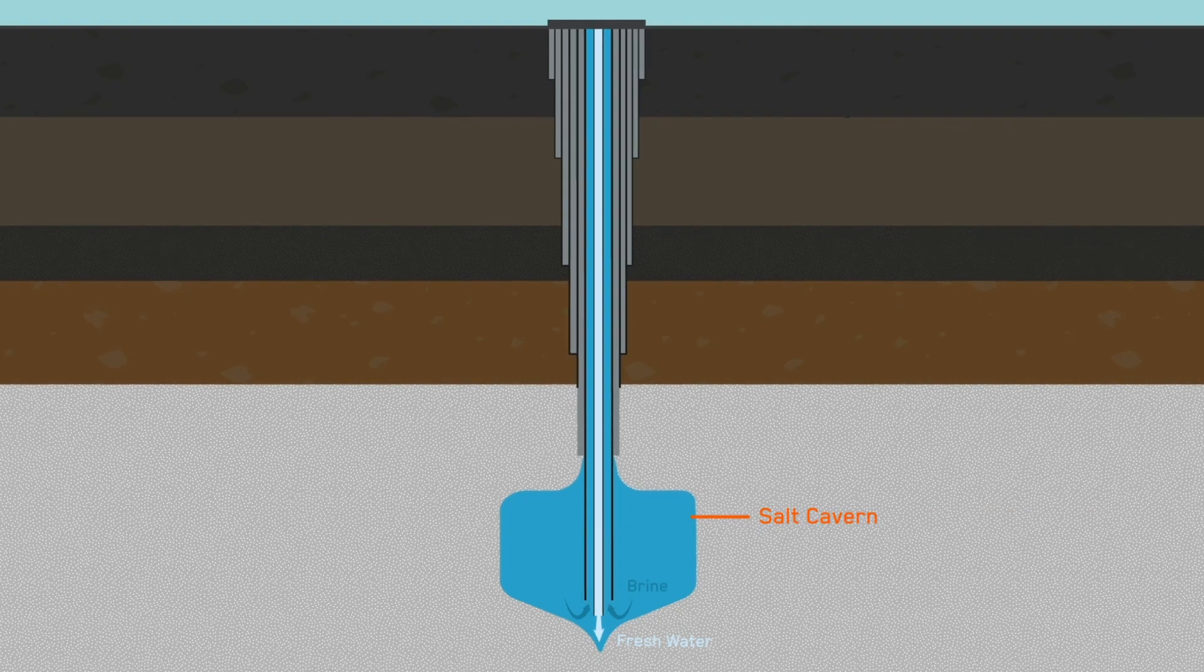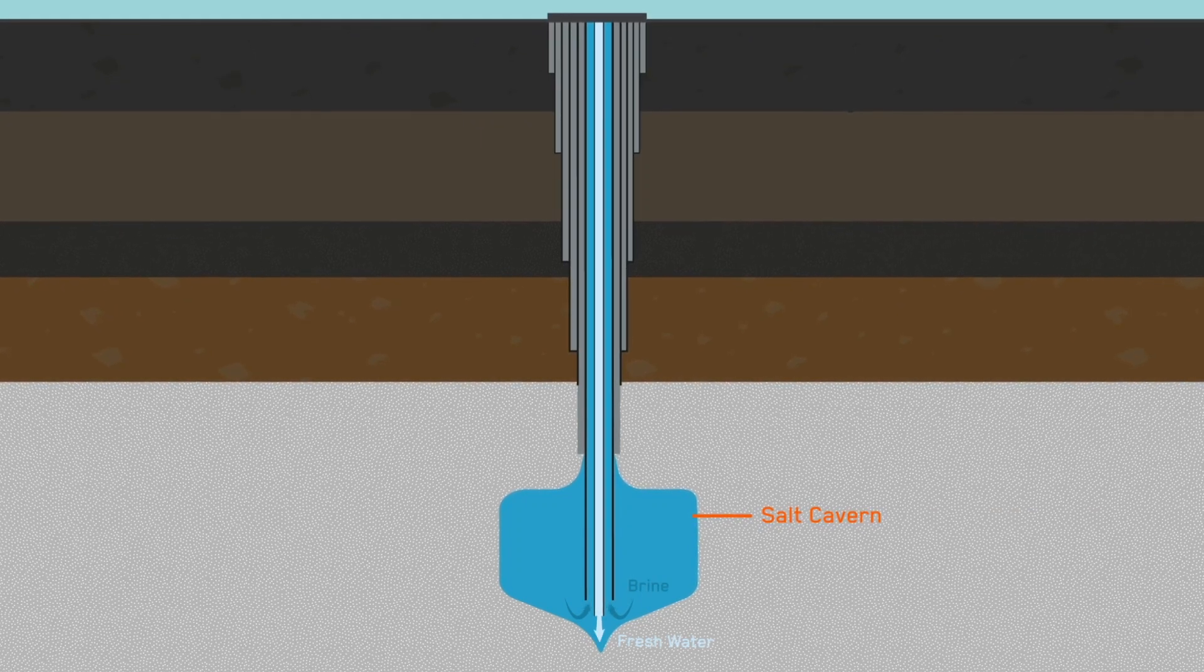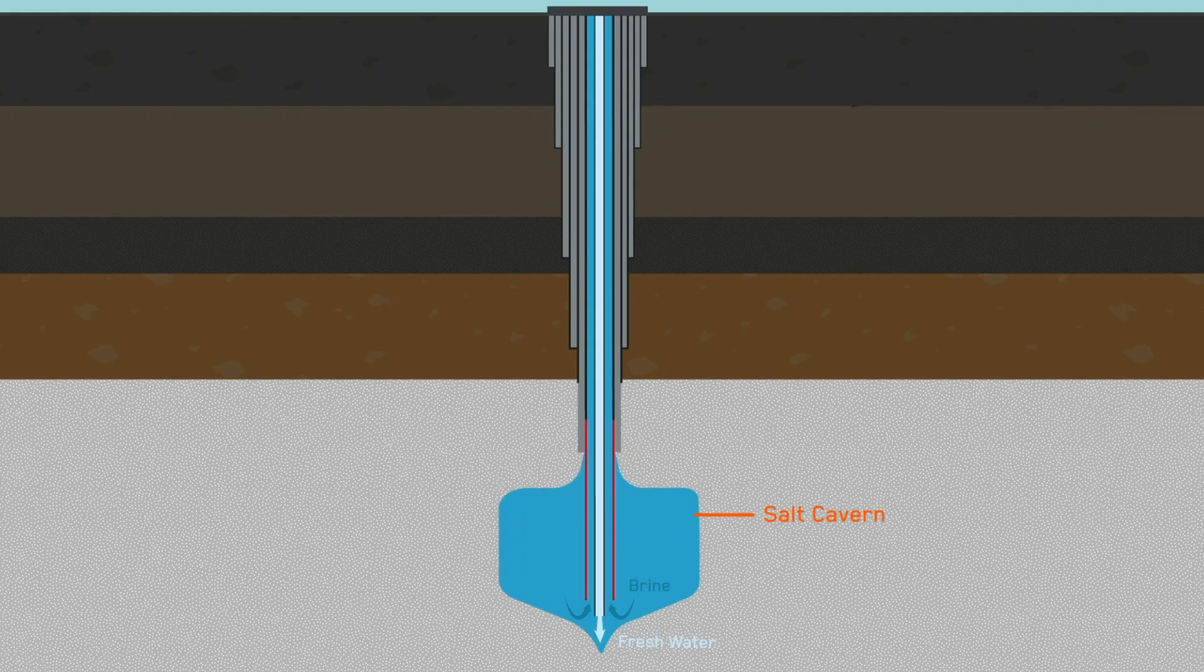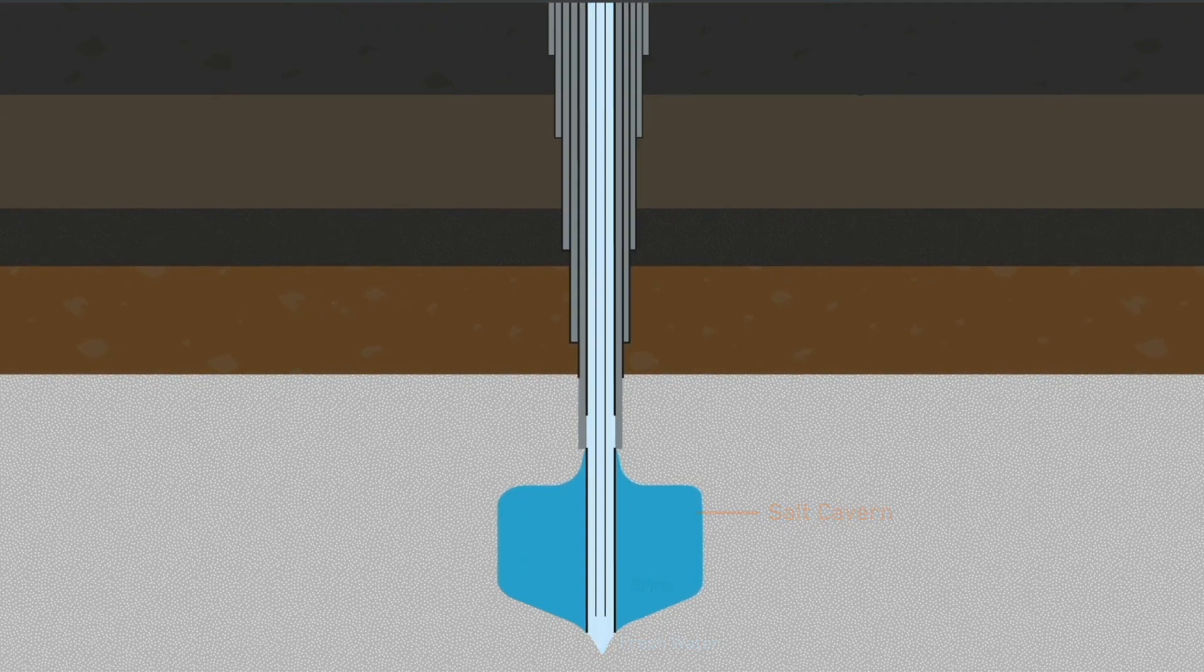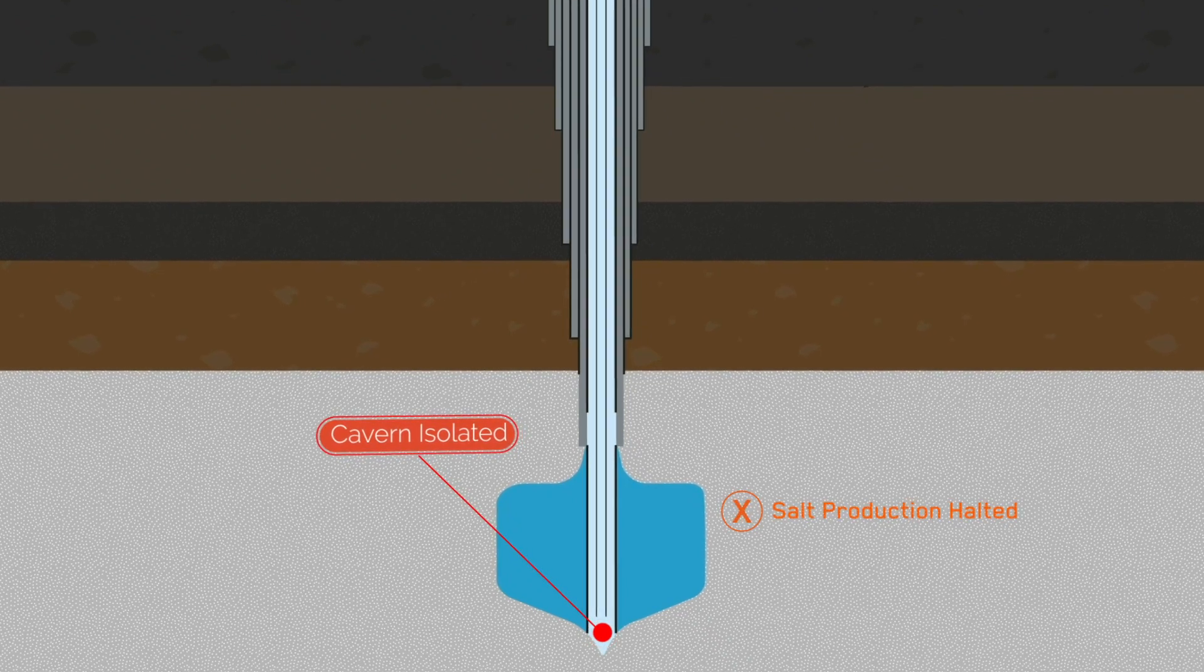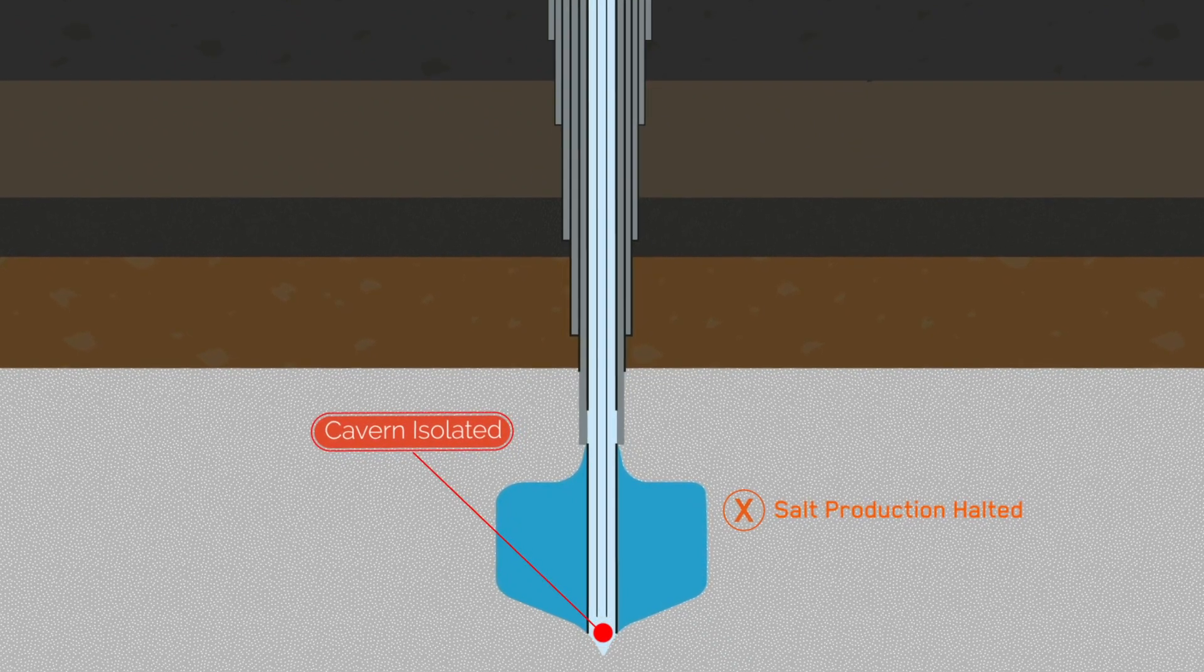The well produces high-quality vacuum salt using a borehole brine process. Following a collapse of the cavern formations, the outer 11 and 3/4 inch casing was sheared, creating a fish that completely isolated the cavern, thereby preventing salt production.